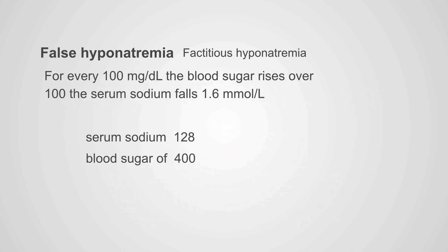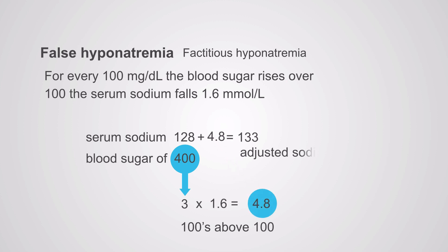One interesting feature of factitious hyponatremia due to hyperglycemia is that the degree of hyponatremia is predictable. You can calculate what the serum sodium would be if the hyperglycemia were corrected: for every 100 mg/dL the blood sugar is above 100, add 1.6 to the measured sodium. For example, a sodium of 128 with a blood sugar of 400 gives three 100s above 100 — 3 × 1.6 = 4.8 — so the adjusted sodium is 133. Some prefer using a correction factor of 2.4 instead of 1.6.